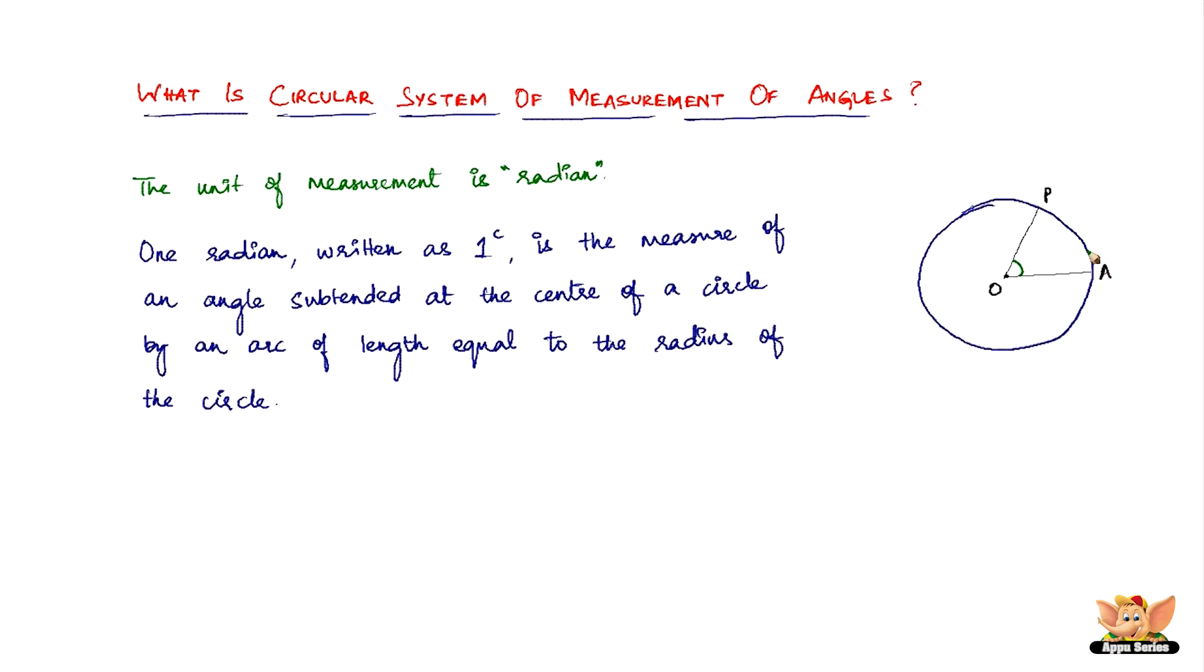Whenever there is an angle formed in a circle, the radius of the circle in this case is OA and as well as OP, because any line that joins the center of the circle to the circumference is the radius. Therefore the radii in this case are OA and OP.